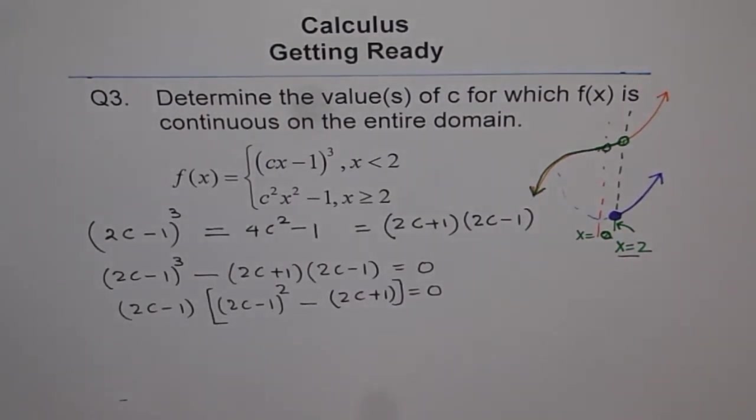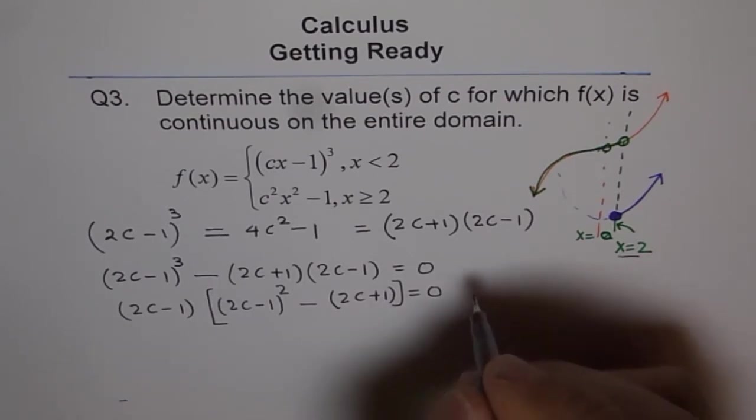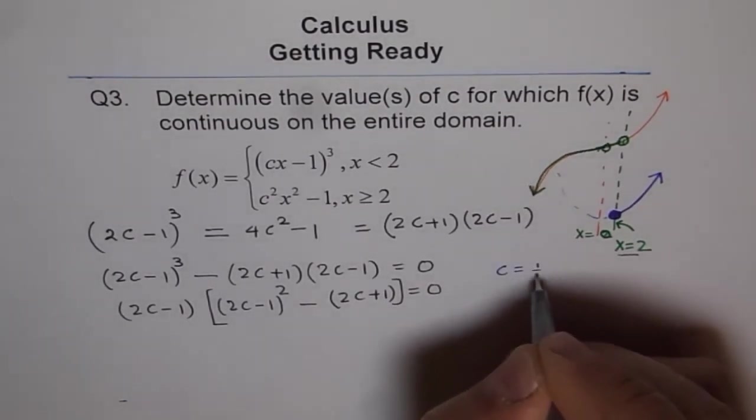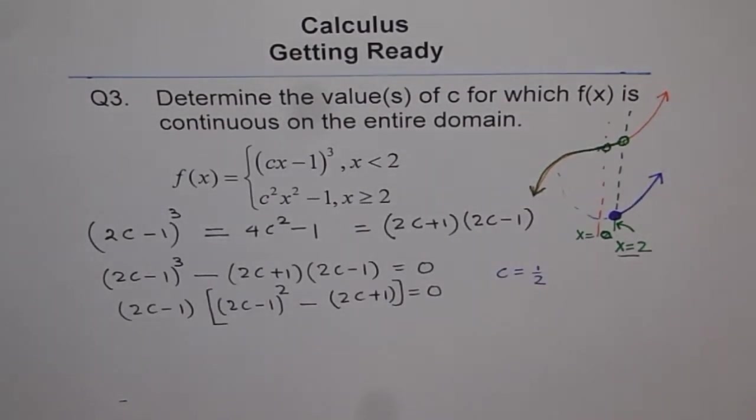I can say 2c - 1 is a common factor. So I am left with (2c - 1)² and here I get minus (2c + 1), equals 0. Now, clearly I got one answer. This can be 0 when c equals 1/2. At least I got one answer. So I can say c equals 1/2 is one of my answers.